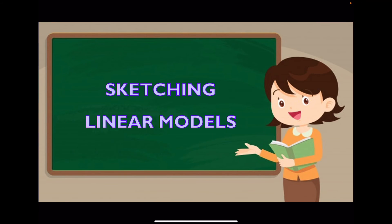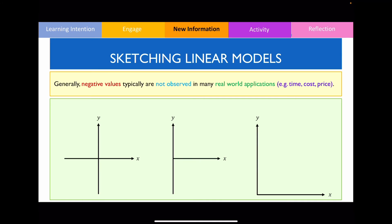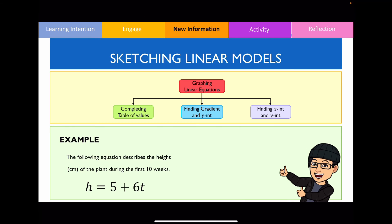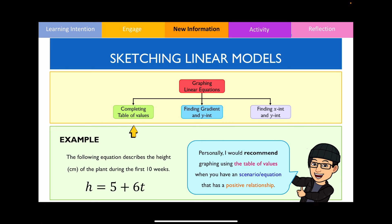The next thing is how to sketch linear models. When sketching, we never have negative values because they don't have significance in real-world contexts — you can't have negative time or negative cost. So when graphing your linear equation, use a Cartesian plane with only positive axes. There are three ways to sketch, but I recommend: for a positive relationship, use a table of values.